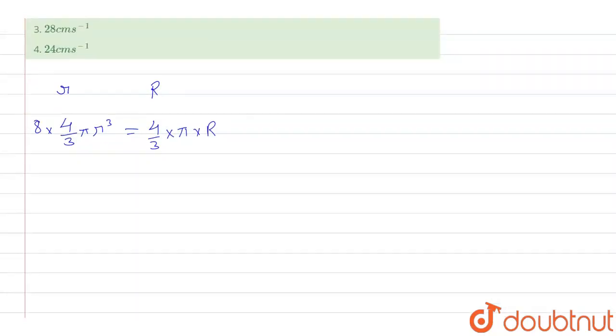Okay, so when we further simplify this, we will get the value of R, and that will come out as R equals 2r. So this is the relation between small r and capital R.